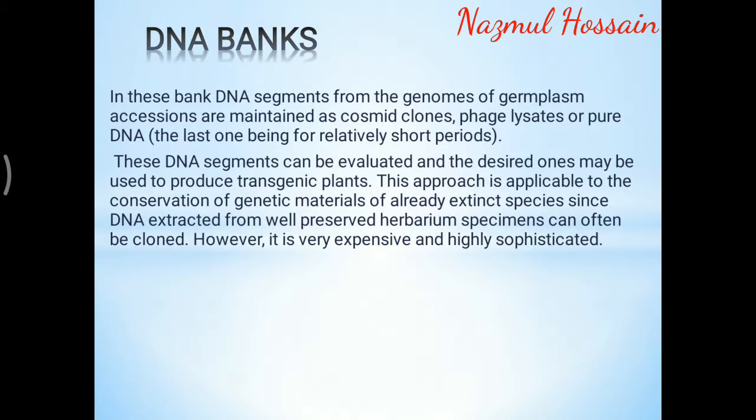DNA banks: in these banks, DNA segments from the genome of the germplasm accessions are maintained as cosmid clones, phage lysates, or pure DNA. These DNA segments can be evaluated and the desired ones may be used to produce transgenic plants. This approach is applicable to the conservation of genetic materials of already extinct species, since DNA extracted from well-preserved herbarium specimens can often be cloned. However, it is very expensive and highly sophisticated.